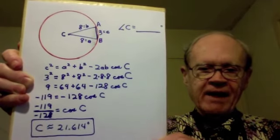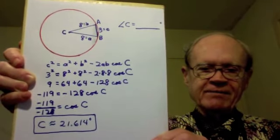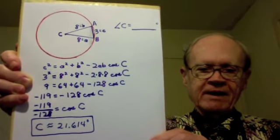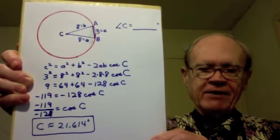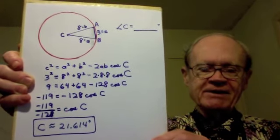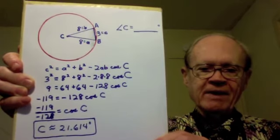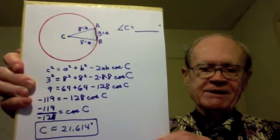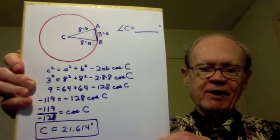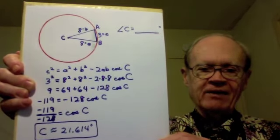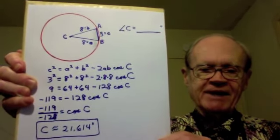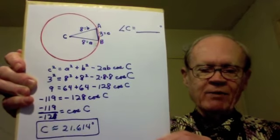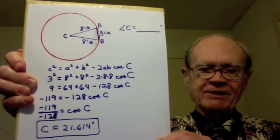Now, I take my calculator, and I see to it that it's in degree mode. The way I enter it into my calculator is I press 2nd cosine, then this fraction. I always press the 2nd button when I'm looking for the value of an angle, and I get angle C equals approximately 21.614 degrees.